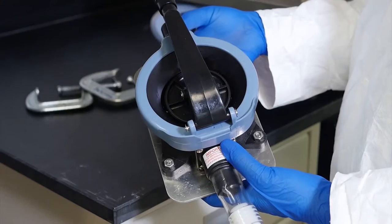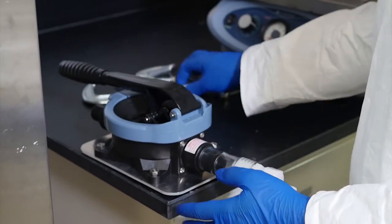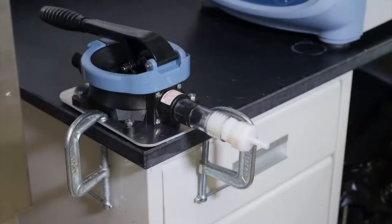A bilge pump will drive the elution process. Secure the bilge pump outside the biosafety cabinet using two C-clamps. The bilge pump is located outside the biosafety cabinet to prevent contamination.